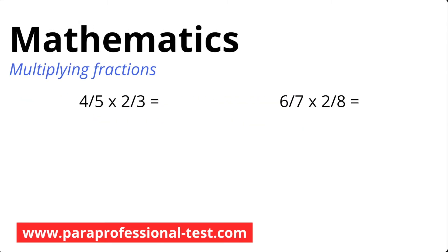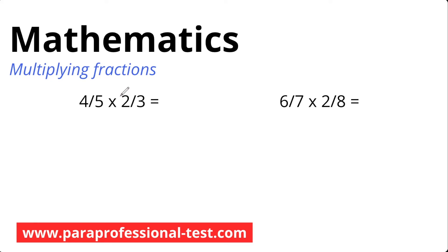Here are 2 examples of multiplying fractions. Take a moment to pause the video and complete the problems. Using the simple 3-step framework, step 1 states to multiply the numbers on top. Here we have 4 and 2 — 4 times 2 is 8. I'll put my divisor bar. Step 2 is to multiply the numbers on bottom: 5 times 3 for this example, which is 15. So far we have 8 over 15.